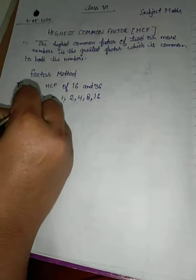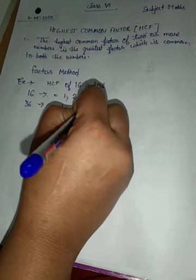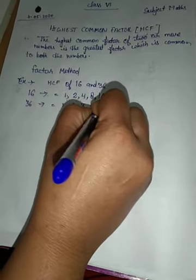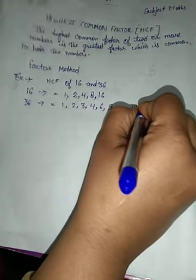And for 36, the factors are 1, 2, 3, 4, 6, 9, 12, 18, and 36.